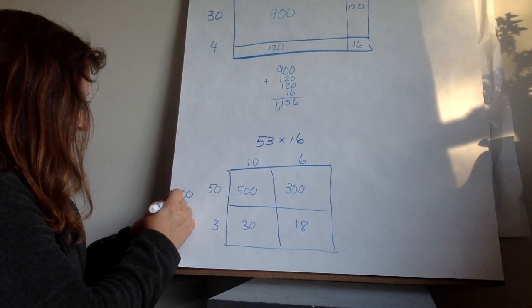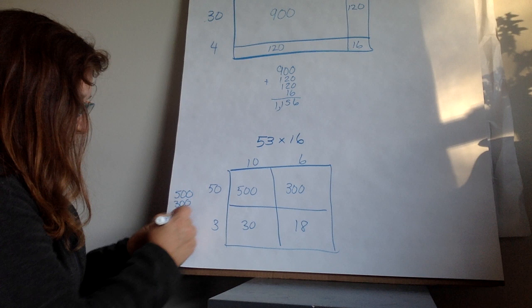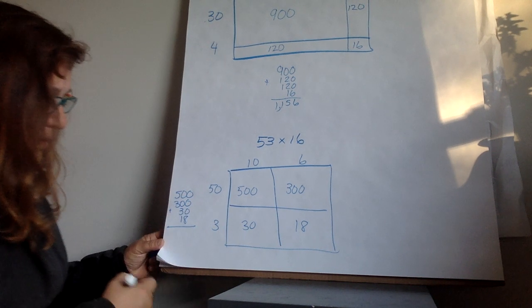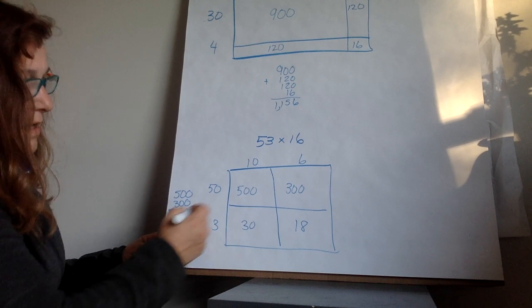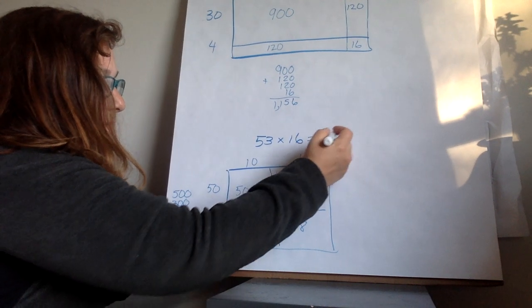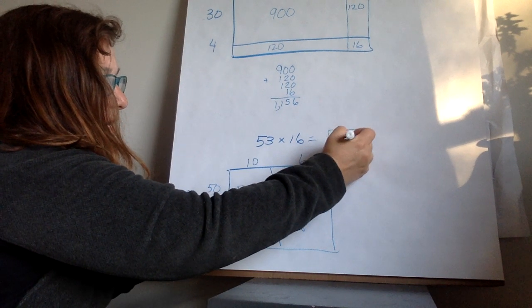500 plus 300 plus 30 plus 18. So I would get 8. So 53 times 16 makes a final product of 848.